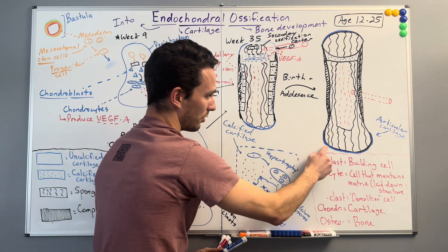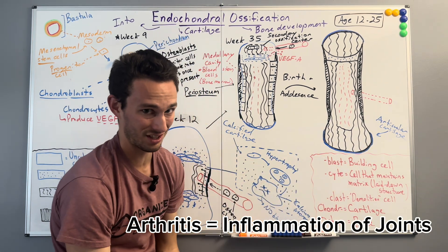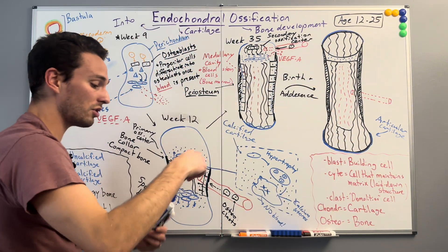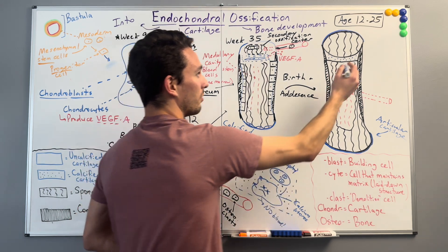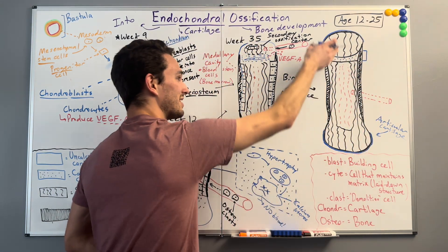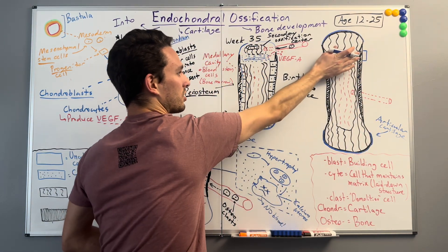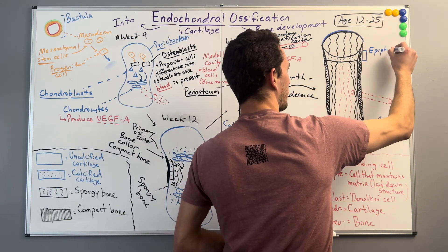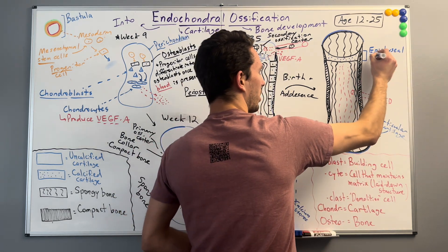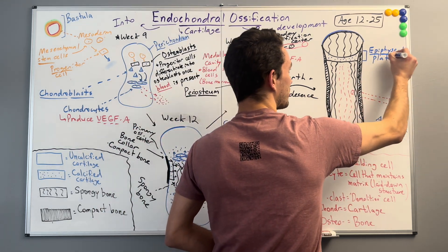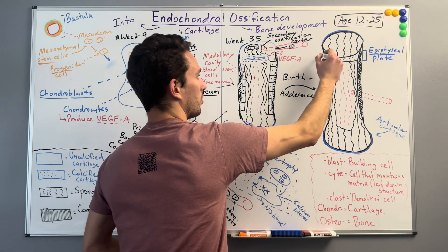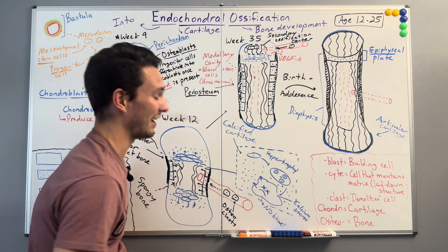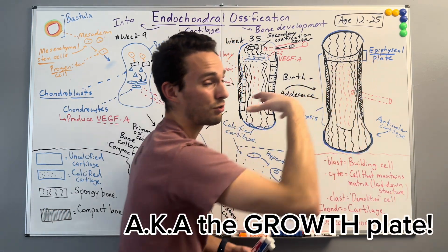If that articular cartilage layer starts to wear down, you can eventually get arthritis — the inflammation of joint tissue. We've also got a little bit of calcified cartilage still present in the main part of the bone called the diaphysis, the shaft. This is called the epiphyseal plate. Epi refers to on top of — on top of the diaphysis. This whole long shaft is called the diaphysis. The epiphyseal plate, otherwise known as the growth plate, is made of cartilage. As we saw previously, that calcified cartilage turned into bone tissue — so this is available space for bone to develop.